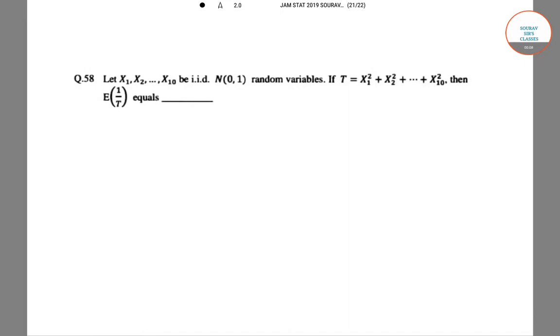Question number 58 is a problem where you have given 10 random variables which follow normal 0,1 and there is another equation x1 square plus x2 square dot dot x10 square which equals T. So you have to find the expectation of 1 by T.